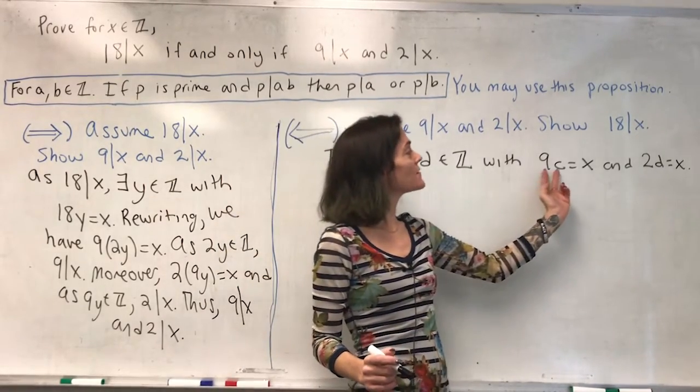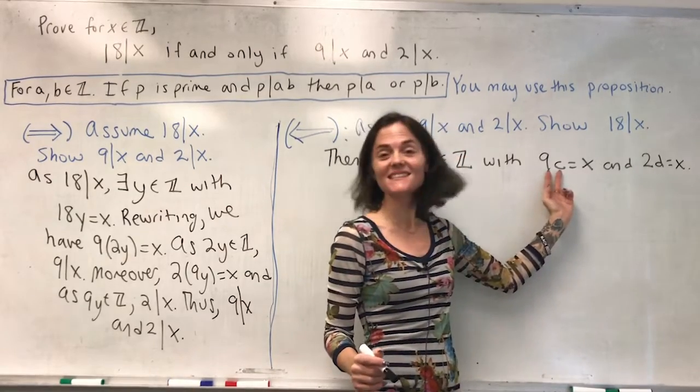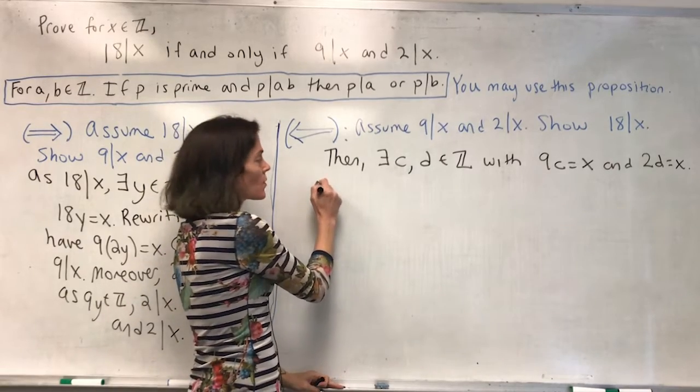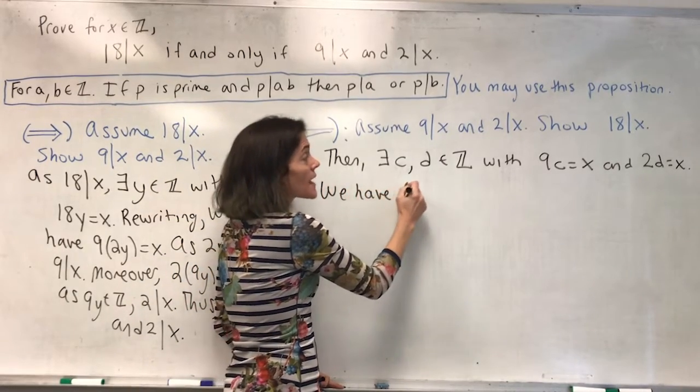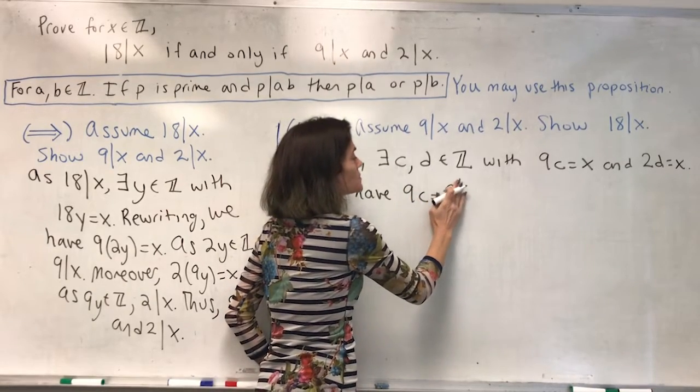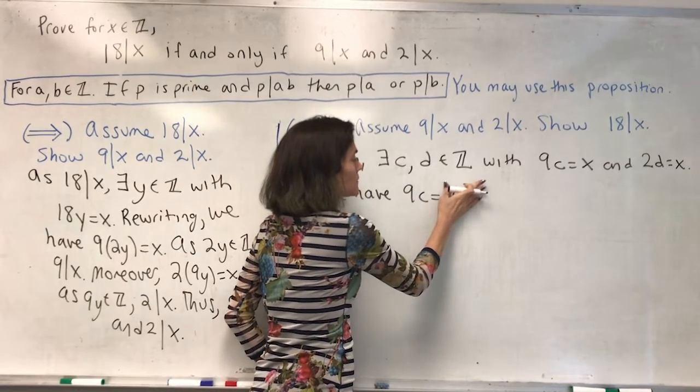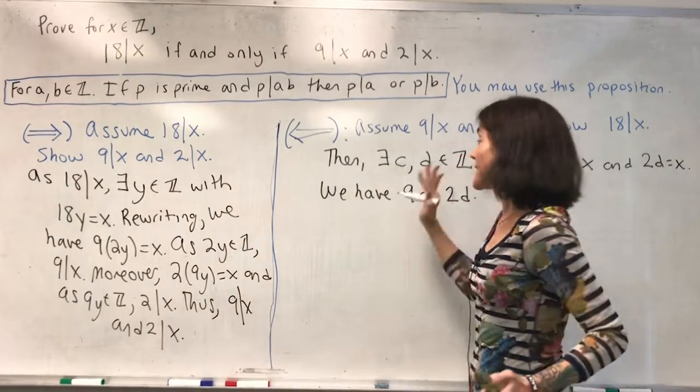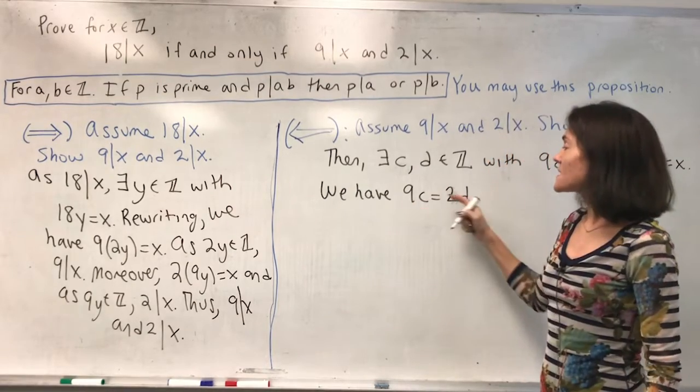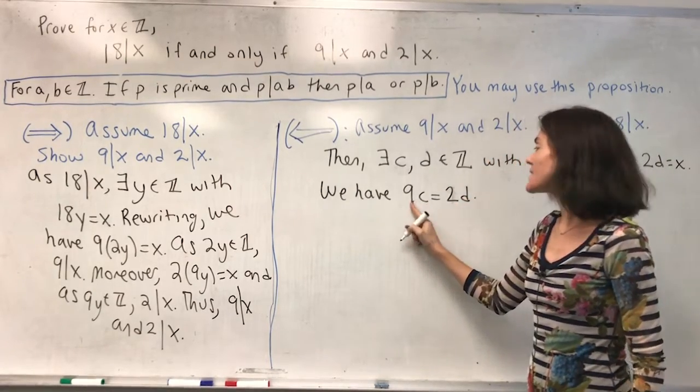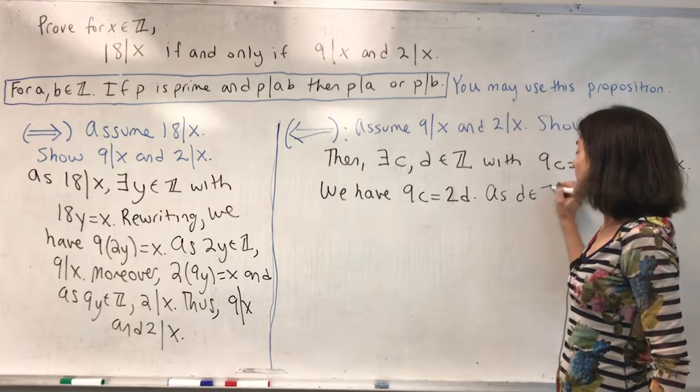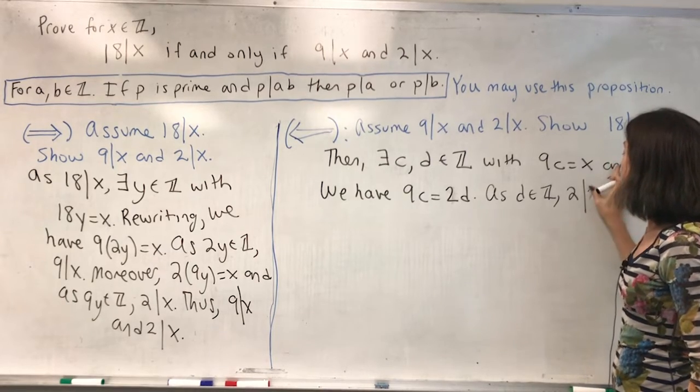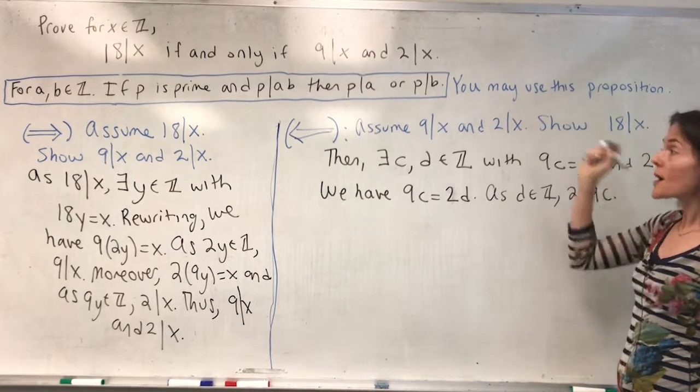You see, I have these two different products, 9c and 2d. They both equal x, so I may set them equal. We have that 9c is equal to 2d. These are all integers here, and what this equation is saying is that 2 divides this product. As d is an integer, we see that 2 divides this product, and this is where we will use the proposition.